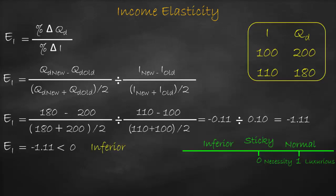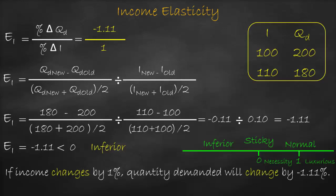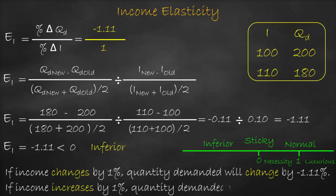Remember, with income elasticity we do not use absolute value — we use absolute value only with price elasticity of demand. Our interpretation: income elasticity equals negative 1.11 divided by 1, which is negative 1.11. This means that if income changes by one percent, quantity demanded will change by negative 1.11 percent, or more precisely, if income increases by one percent, quantity demanded will decrease by 1.11 percent.